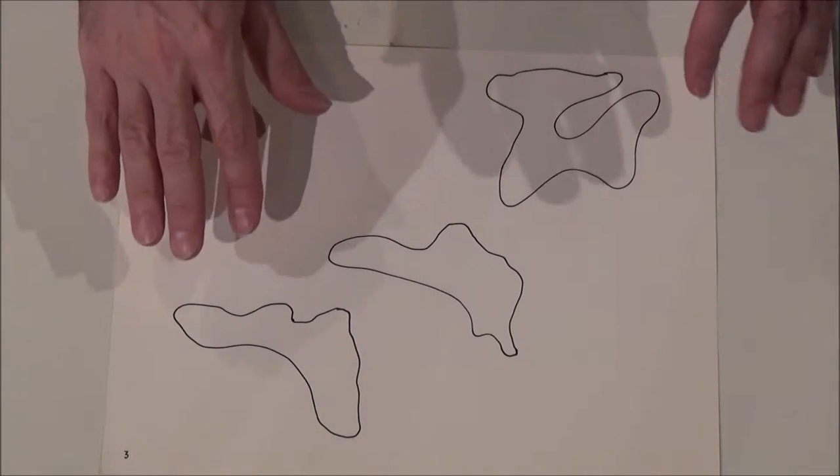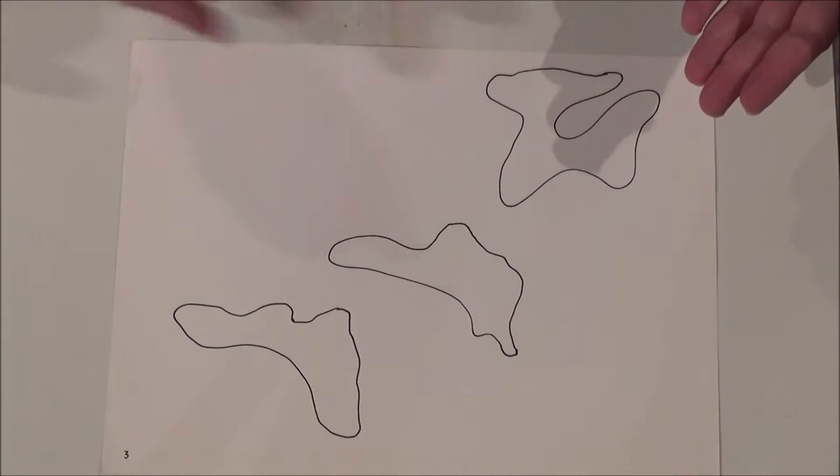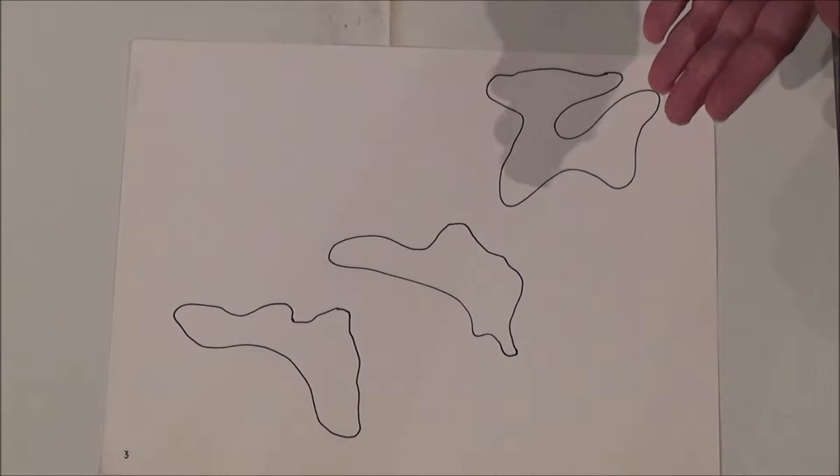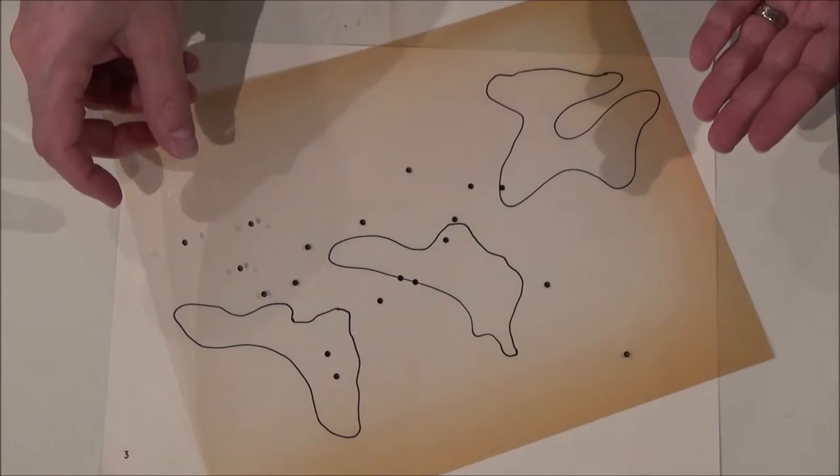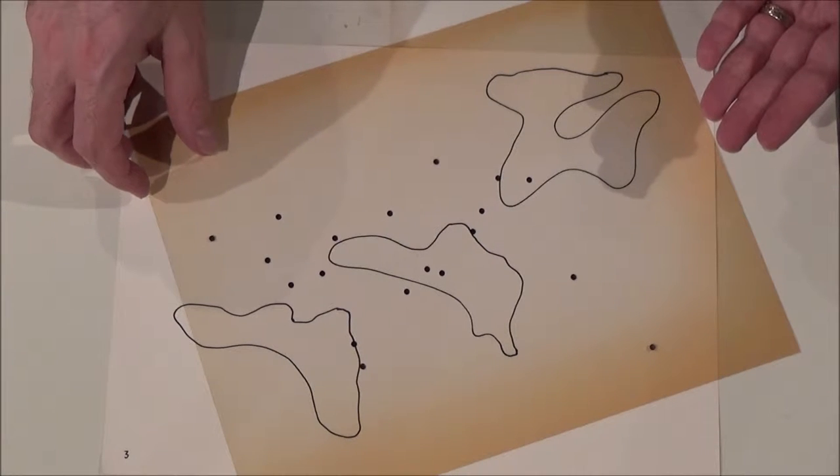I start with this sheet of three shapes, corresponding to the three cartridges I'll be using, one, two, and three. I'm going to overlay a transparency which has several dots on it, several solid dots. These are going to correspond to sound events.